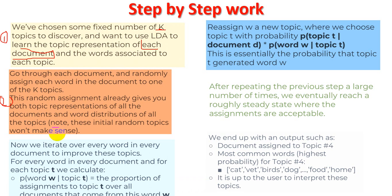Because this is a generative model, as we iterate multiple times our accuracy will continue to improve — the more epochs or counts we run, the better the result. We iterate for every word in every document and calculate using the formula: the probability of a word given the topic of that word. This proportion represents the assignment of the word w to a given topic.